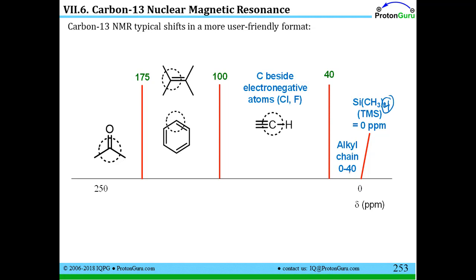Now these are approximate ranges. If you have a carbon beside an electronegative atom like chlorine or fluorine, you're going to see a signal between around 40 and 100, and likewise if you have a carbon that's SP hybridized like this.